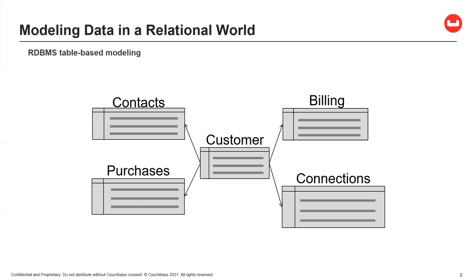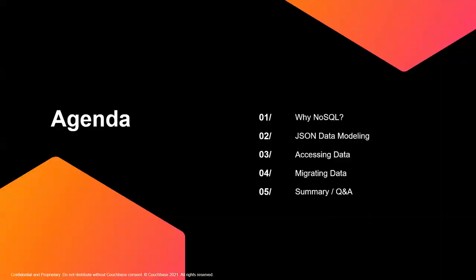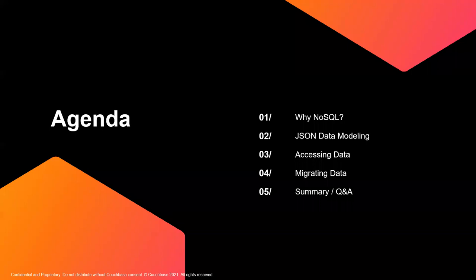If you're like me, when you think data modeling and databases, you usually think of modeling it like a relational table-based model. But if you want the benefits of a non-relational database and the benefits of a JSON database, you may have to start thinking a little differently about how you model data. Fortunately, Couchbase, today's sponsor, is going to give us some familiar tools of the relational world combined with the NoSQL JSON world.